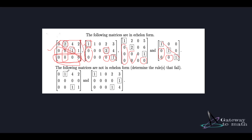Now let's look at two examples that are not in row echelon form. In the first one, there is a row with all zero entries that should be at the bottom but isn't — so this matrix is not in row echelon form. In the second example, one pivot is on the left-hand side rather than to the right, and there is a non-zero entry below a pivot in a pivotal column. It fails two conditions, so this matrix is also not in row echelon form.